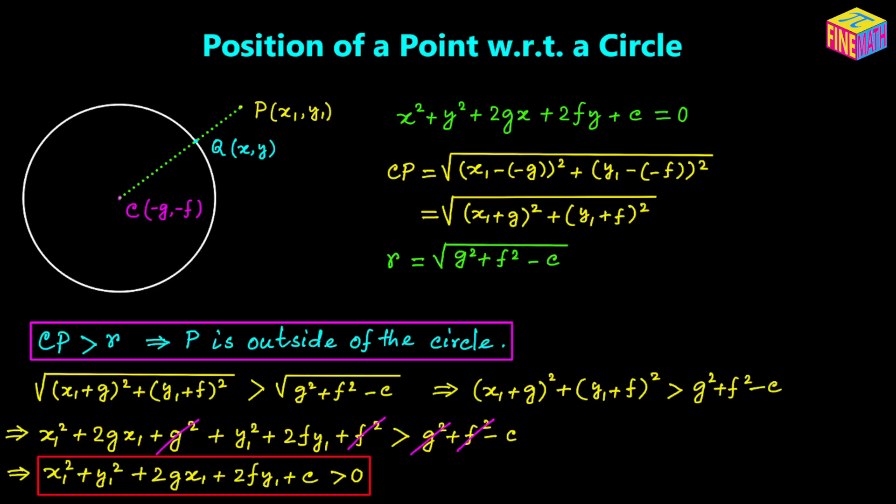So if we are provided with the general equation of a circle and the coordinates of a point, we can plug the coordinates into the left-hand side expression of the general equation. If the value of that expression turns out to be positive, then we know for sure that point P is outside of the circle. I hope things are clear up to this point.